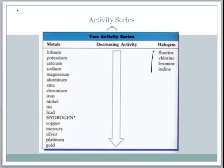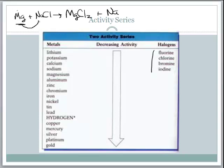For example, let's say we're talking about magnesium reacting with sodium chloride. We can write the products as magnesium chloride and sodium. The activity series tells you if the metal doing the replacing is strong enough to replace the other metal. Magnesium is actually lower on the activity series than sodium, so this reaction would not happen.